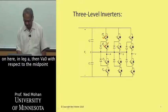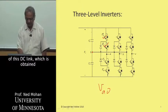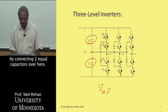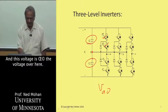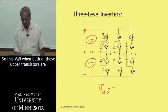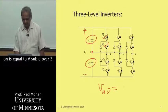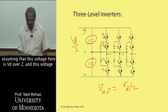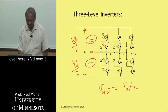then in leg A, VA zero with respect to the midpoint of this DC link, which is obtained by connecting two equal capacitors over here, and this voltage is one-half the voltage over here. So this VAO, when both of these upper transistors are on, is equal to V sub D over 2, assuming that this voltage here is VD over 2, and this voltage here is VD over 2.